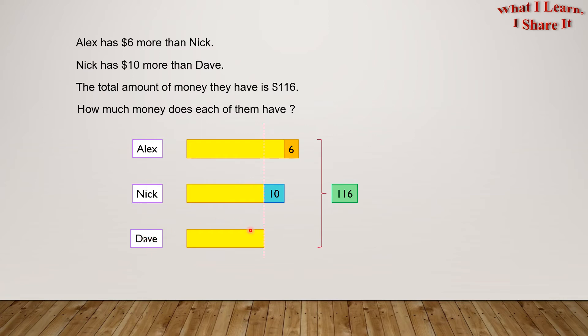If we compare Alex and Nick's boxes, we come to know that this much portion is $10. If we cross these three boxes out, then we will have the same amount for Alex, Nick, and Dave.